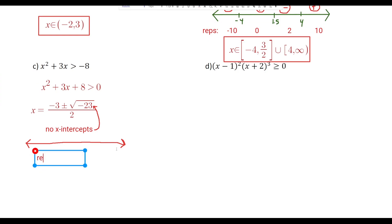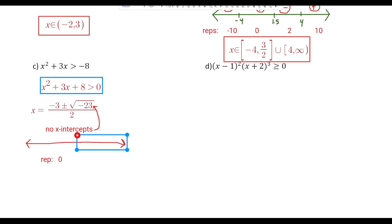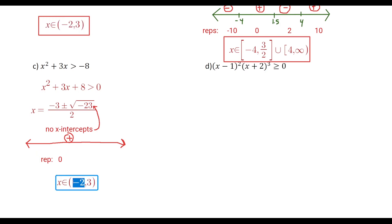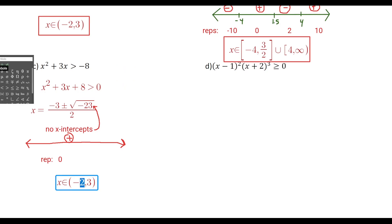Since the expression is positive everywhere and we're looking for where it's greater than zero, the solution set is all real numbers: x ∈ (−∞, +∞). This is a special case where the parabola never crosses the x-axis and is always positive.